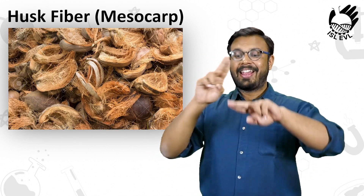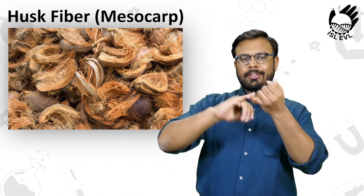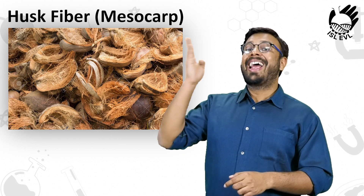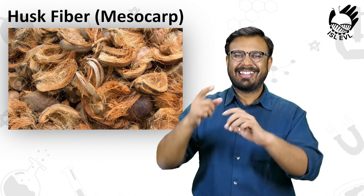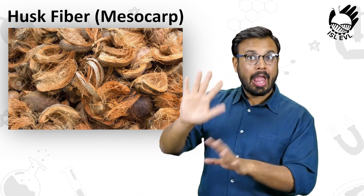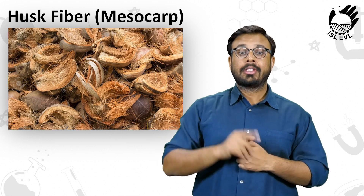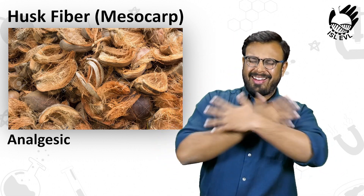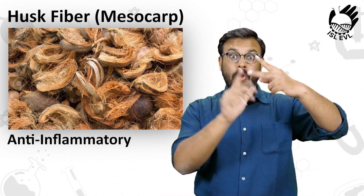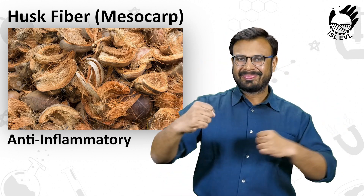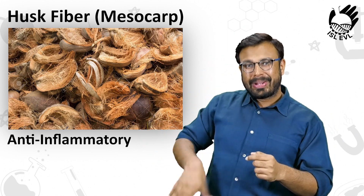The third part which can be used is the husk fiber, also known as the mesocarp. When the coconut is de-husked, we throw the husk away — but even this part is beneficial. It's an analgesic, that is, it is used to relieve pain. It also has anti-inflammatory purposes and is used for treatment of arthritis and diarrhea.